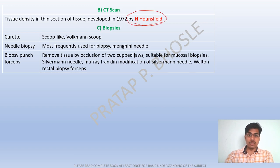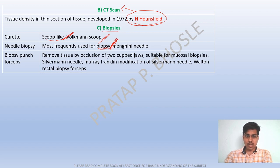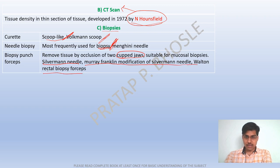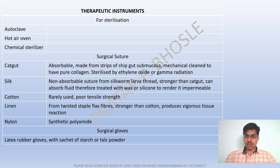Remember the CT scan was developed by Hounsfield and Cormack. The myopsies curette is a scoop-like instrument. For needle biopsy, the Menghini needle is most frequently used. Silverman needle, Murray-Franklin modification of the Silverman needle, and Walton rectal biopsy needle are used for biopsy punch forceps, which remove tissue by occlusion of two cupped jaws.